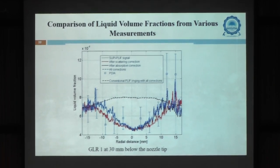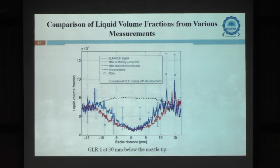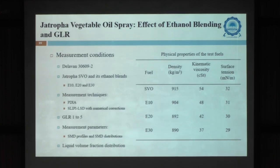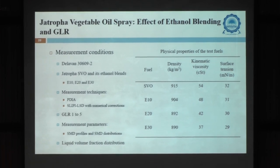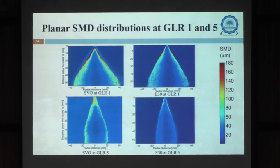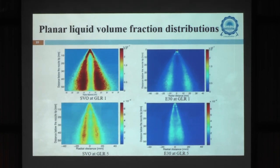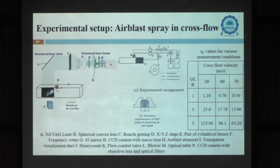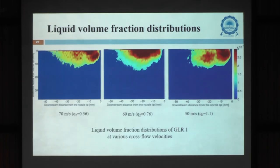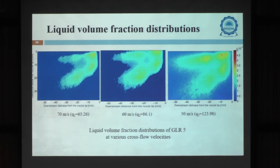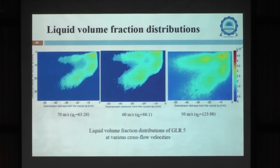We also compared our liquid volume fraction measurement with PDPA data, capturing the double-hump behavior of the hollow cone spray that conventional techniques could not resolve. We extended this to vegetable oil spray, relevant for gas turbines adopting biofuels, finding that higher GLR and higher ethanol percentage in the blend produce a more uniform spray. For the air blast spray in cross flow, with varying momentum ratio, two lobes appear due to larger droplets at the top and smaller droplets making the distribution non-uniform, demonstrating how spray uniformity can be studied.